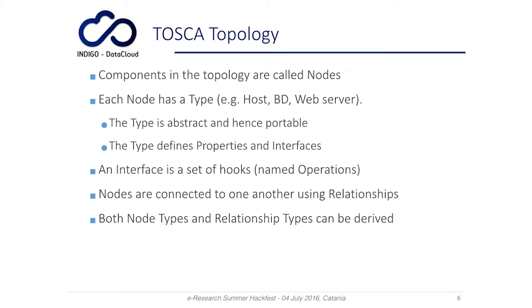The interface is a set of hooks named operations. These interfaces are used to manage the node — for example, you can have an interface to create a database, or to configure a server. Each node type has its own interfaces used to manage the life cycle of that node. Nodes are connected using relationships. Both node types and relationship types can be derived, so you can create customized types to use in your TOSCA template.